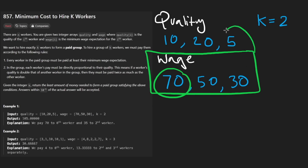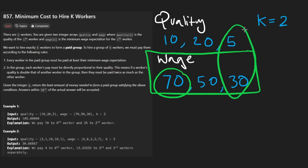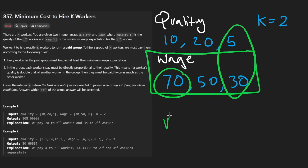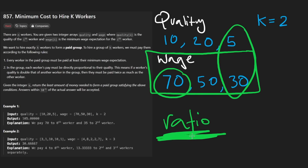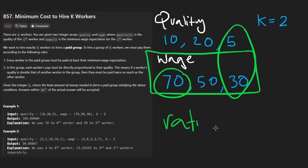But if we hire this person, we have to pay them at least 35. Why 35? Well, it has to do with the ratio. The ratio is really what determines the wage for this problem.